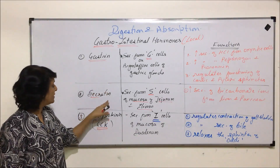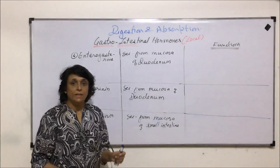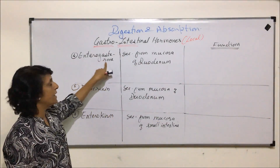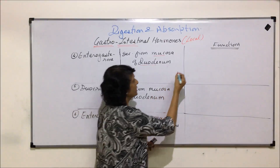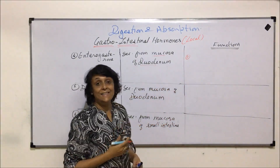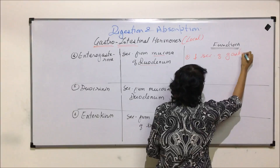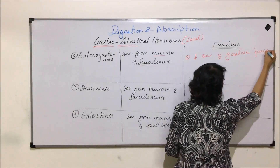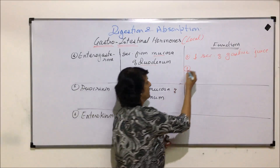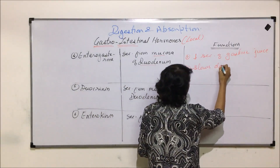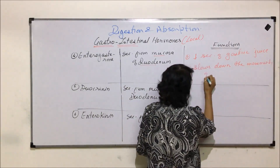So those are the three main local hormones: gastrin, secretin, and cholecystokinin. The next local hormone is enterogastron, and it is secreted from the mucosa of the duodenum. Its functions are to decrease the secretion of gastric juice and to slow down the movement of the stomach region.